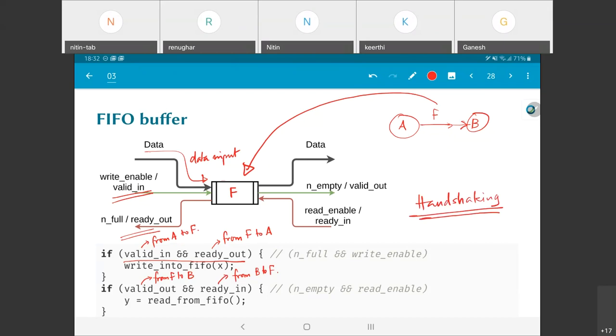Now, if I assume that F is unbounded, that is to say there is no limit on the amount of data that it can have.